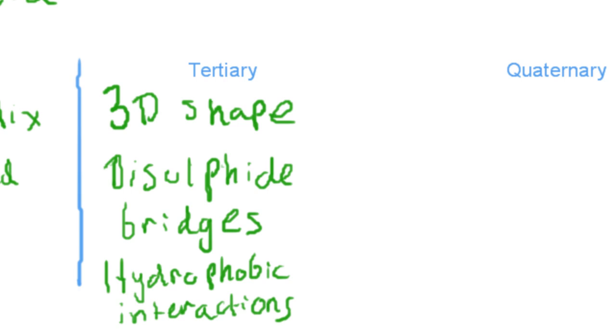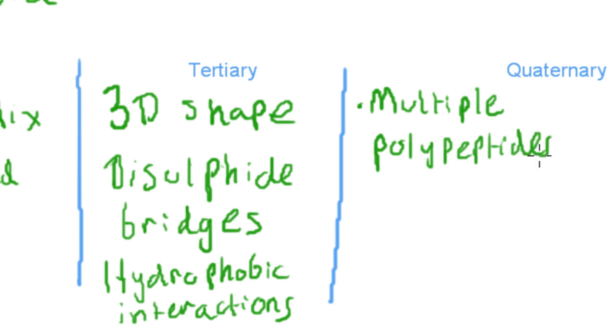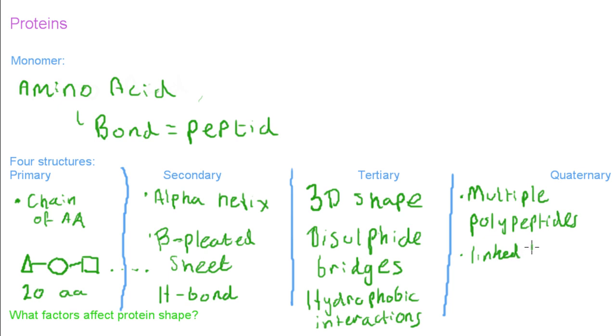And lastly the quaternary structure, which is not found in every single protein, but in some of them, such as hemoglobin in your blood. The quaternary structure is achieved through having multiple polypeptides. So not multiple proteins—multiple polypeptides. Saying multiple proteins is technically wrong. And these are linked together. So they're sort of tangled into each other to be able to achieve this structure. These are also achieved through the disulfide bridges and hydrophobic interactions.